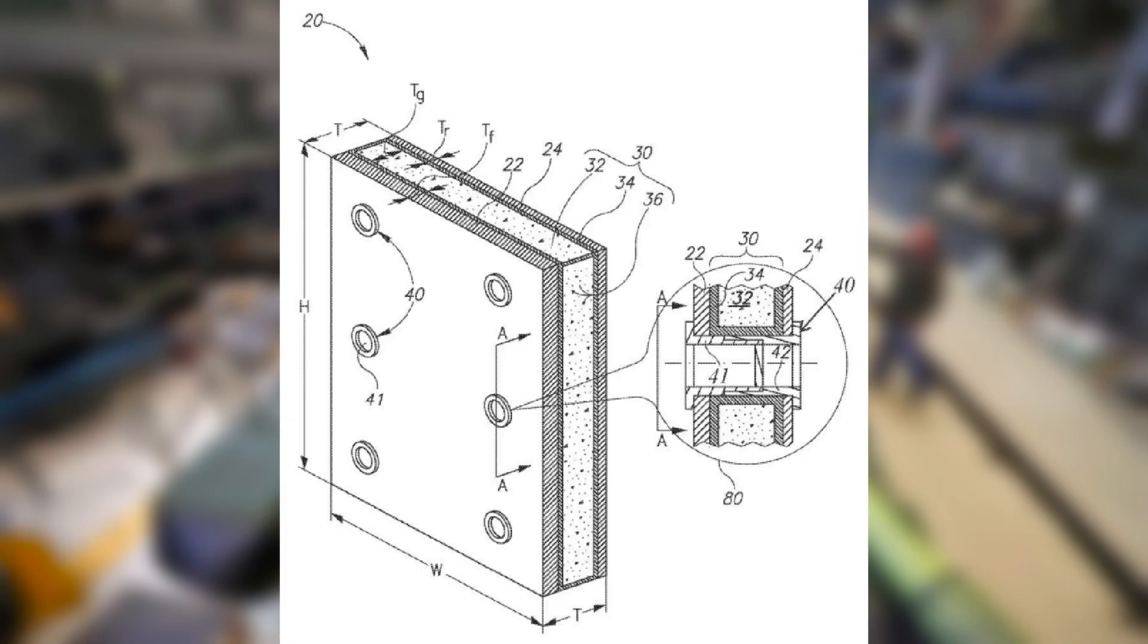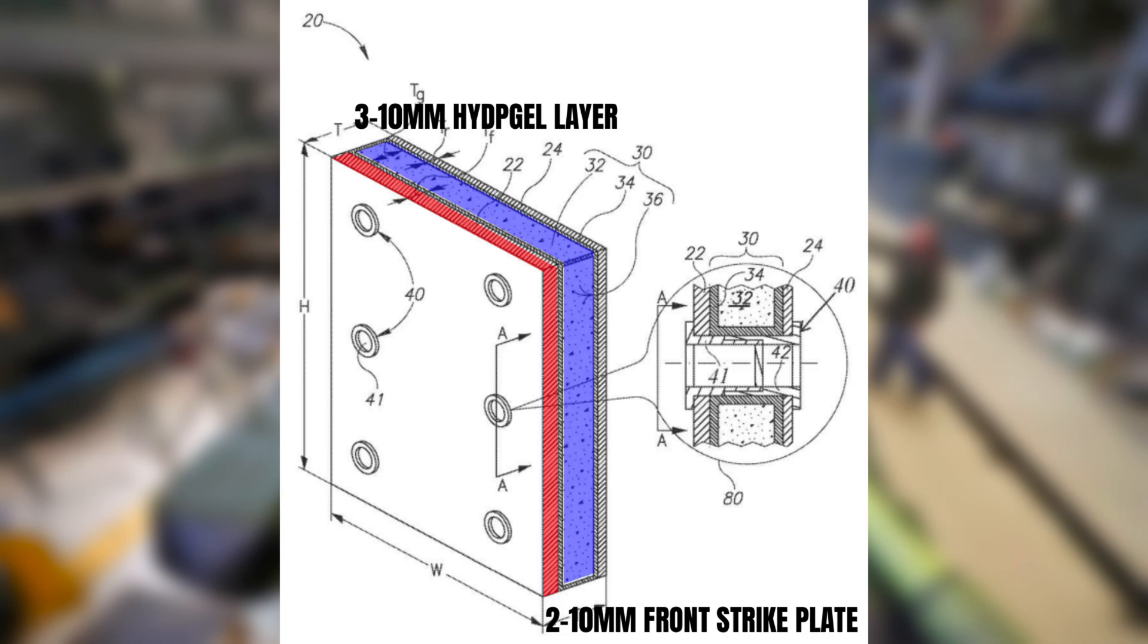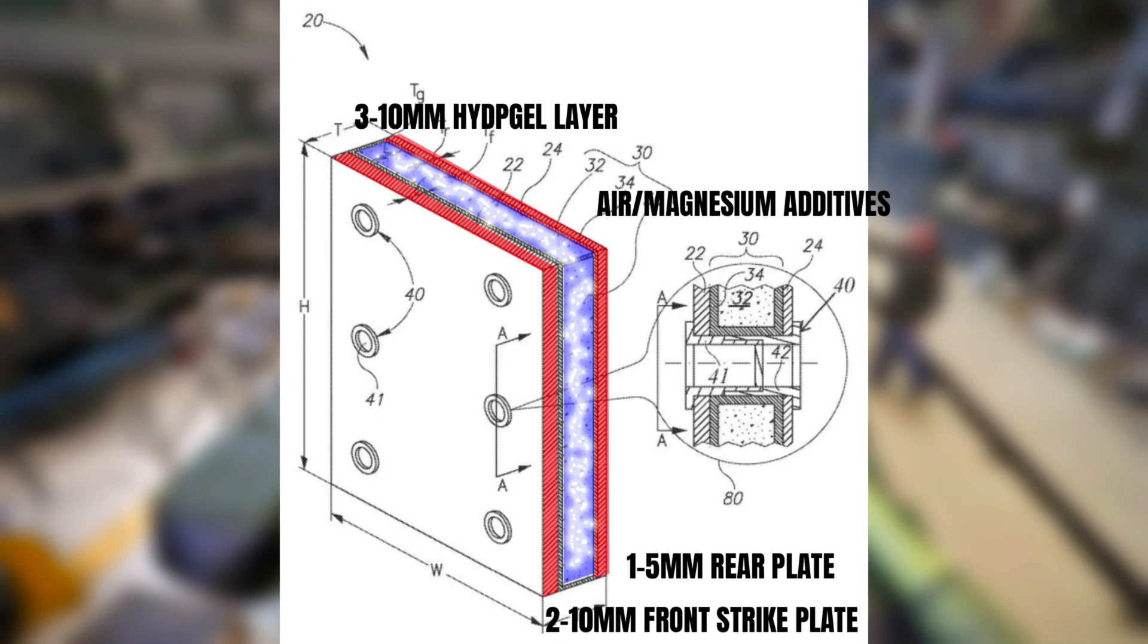At the core of the design is a cassette consisting of a front strike plate of between 2 and 10mm thickness followed by a hydrogel layer 3 to 10mm thick placed in a polymer container. At the rear is a 1 to 5mm thickness plate. The hydrogel layer also has tiny air pockets or energetic additives such as magnesium powder depending on the configuration.